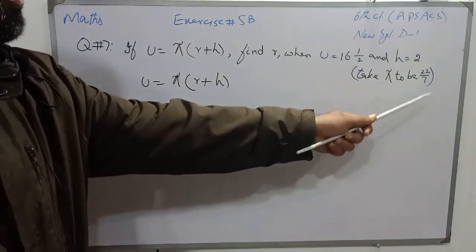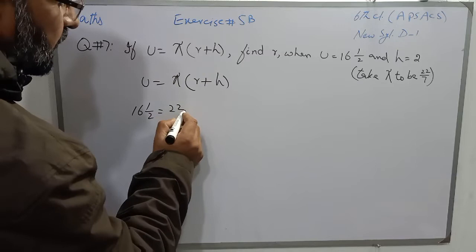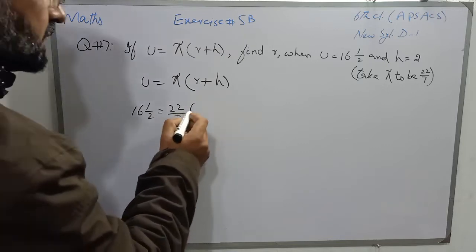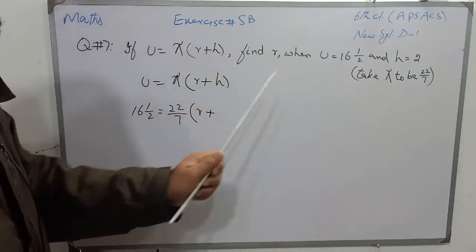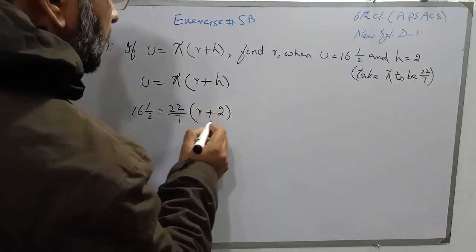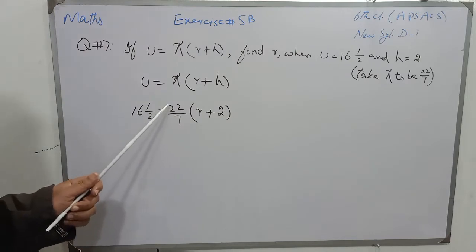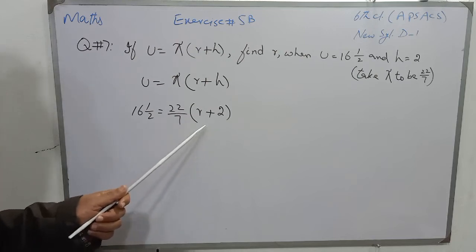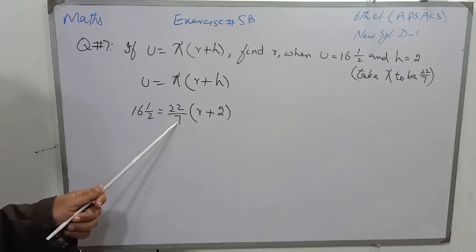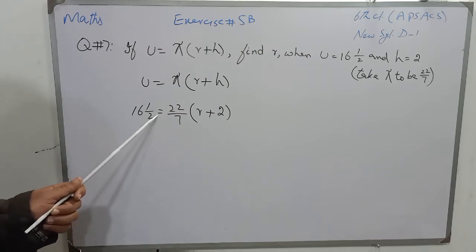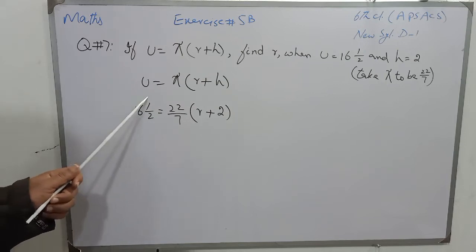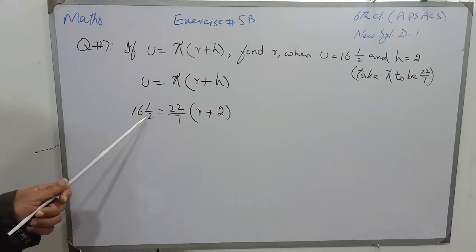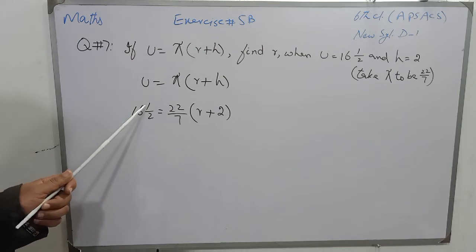Now we will replace the values of u, h, and pi. The value of u is 16 whole number 1 over 2, so I will write that in place of u. The value of pi is 22 over 7, so I will write 22 over 7 into r — r we have to find, so it is written as it is — and the value of h is 2. Now, 22 is multiplying and 7 is dividing, so when we transfer 7 to the other side it will multiply, and when we transfer 22 to the other side it will divide.